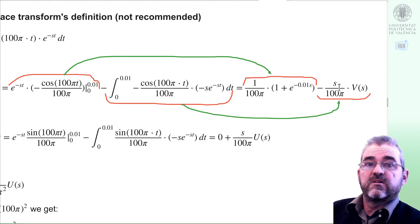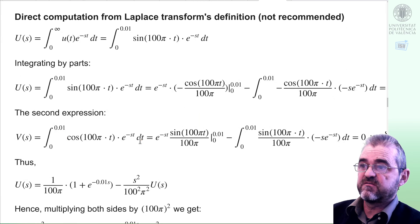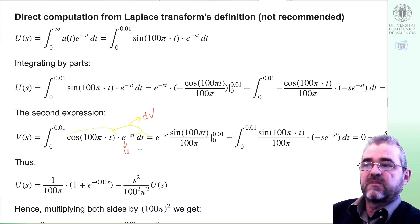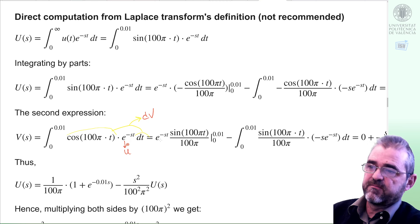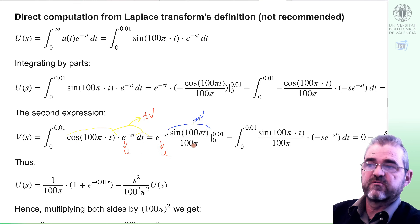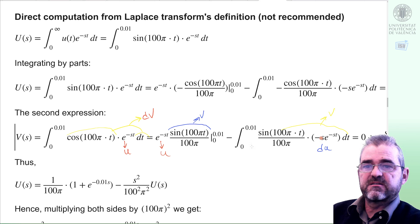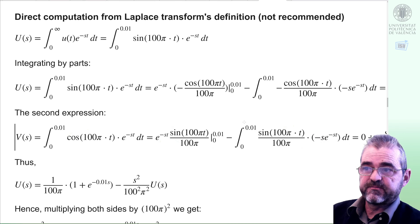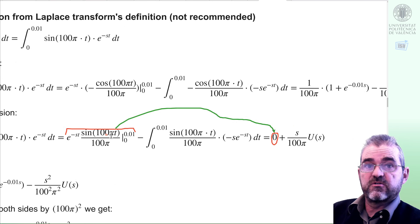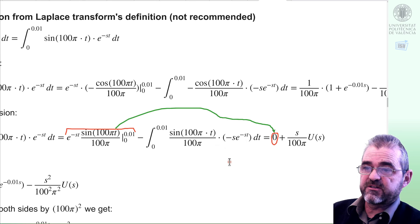We do the same integration by parts for V of s: if u is the exponential and dv is cosine dt, then the integral of cosine is sine divided by omega. Since the sinusoid at time 0 is zero and at the semiperiod is also zero, the boundary terms vanish. Taking s out of the remaining integral and accounting for two negative signs giving a positive term, this stuff ends up expressed in terms of E of s — the original Laplace integral we are evaluating.